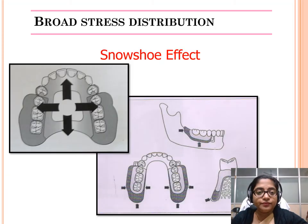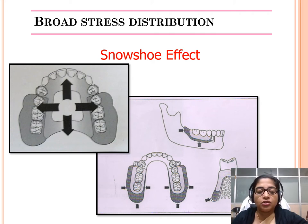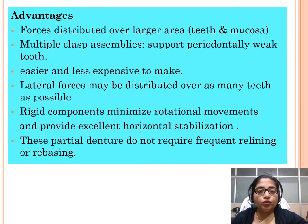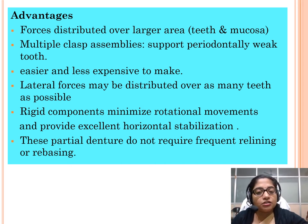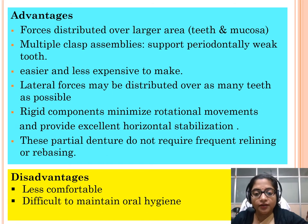The third philosophy is broad stress distribution — the snowshoe effect. This advocates covering as much area as possible so that forces are dissipated over a larger surface area, reducing forces on the abutments and ridges. Advantages include force distribution over a large area, multiple clasp assemblies supporting periodontally weak teeth, easier and less expensive fabrication, rigid components minimizing rotational movements, and no frequent relining or rebasing required. Disadvantages are that it can be less comfortable and more difficult to maintain oral hygiene due to the large surface area covered.